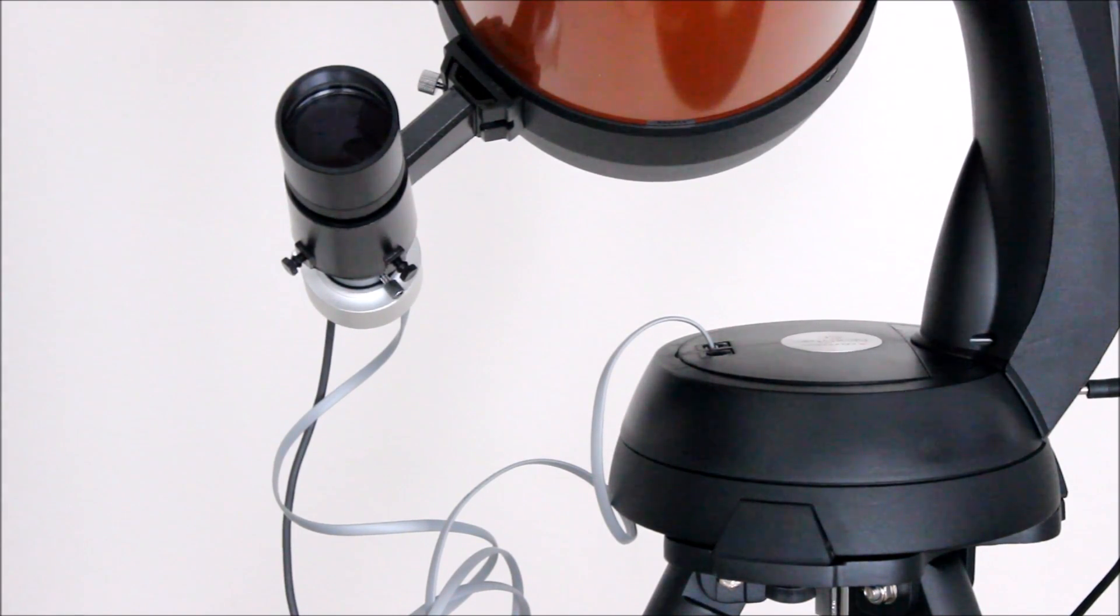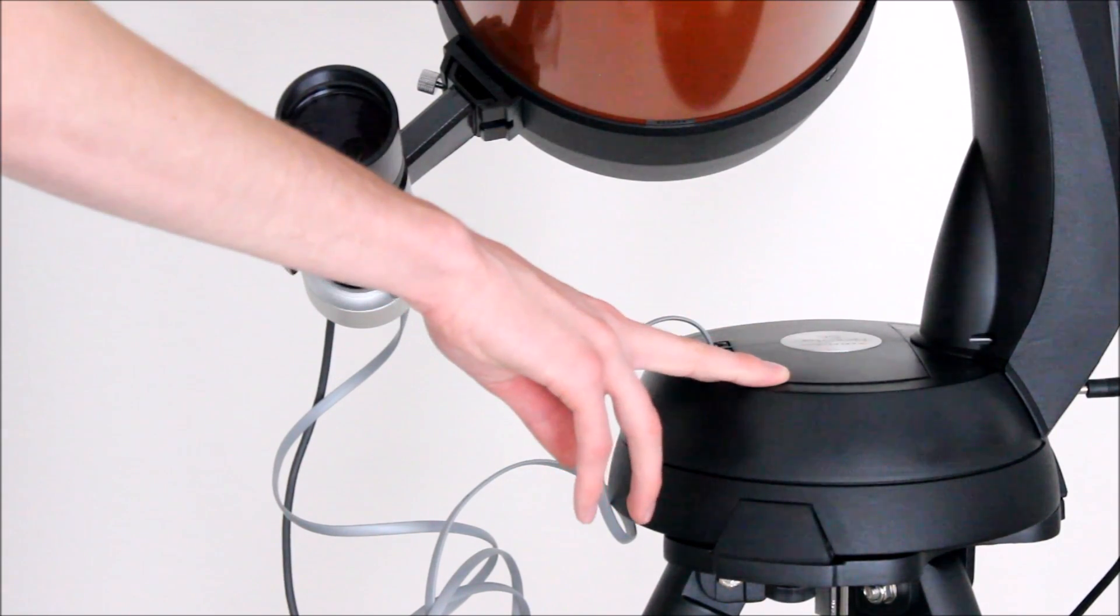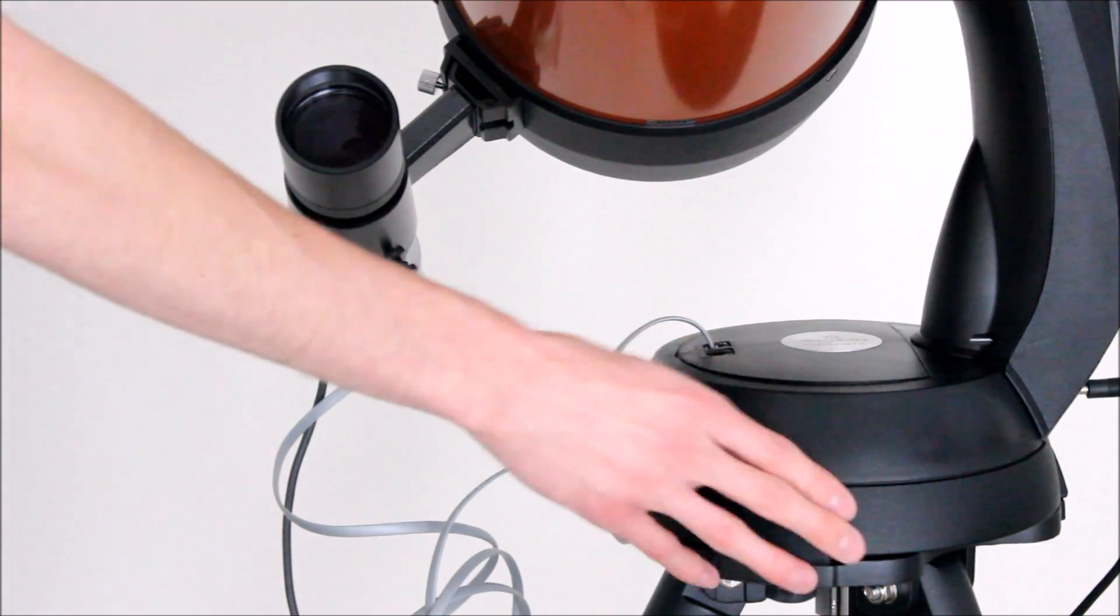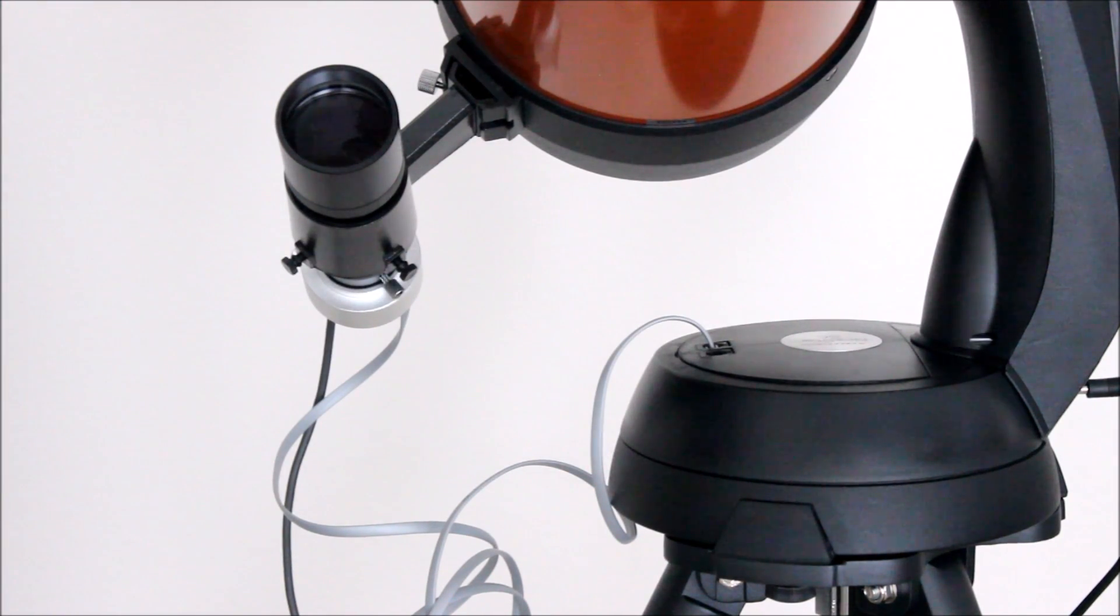Unfortunately Celestron has discontinued those, so you can't buy that particular wedge. But now that they came out with the evolution series of telescopes, the wedge for that they actually made compatible with the 6SE and the 8SE. So you can now get a wedge for this telescope and you won't have to buy an equatorial mount. You can still auto guide and get really good astrophotography pictures.